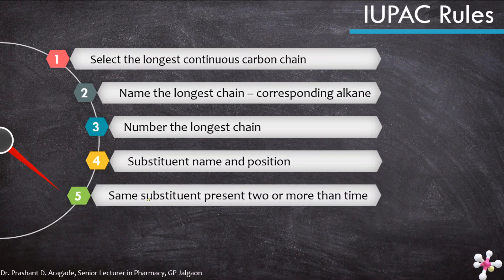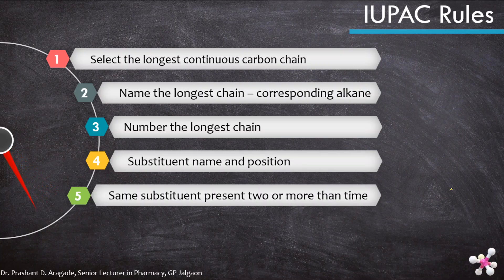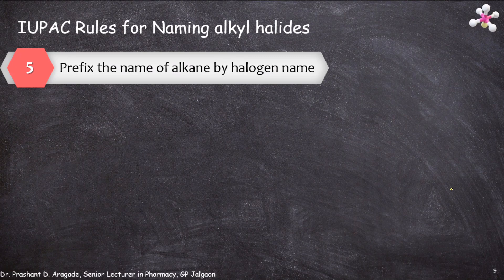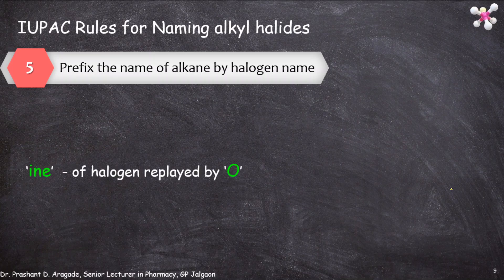Rule 5: if the same substituents are present two or more times, use the prefixes di, tri, or tetra. If two or more different substituents are present, arrange the substituents according to their alphabetical order. The most important rule is to prefix the alkane name with the halogen name. The halogen names end in -ine, which must be replaced by -o.